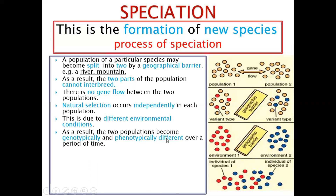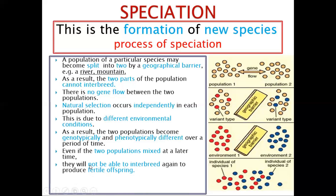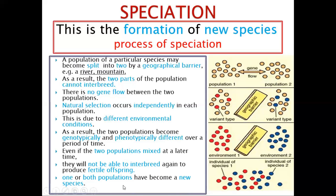If you remove the barrier and leave the populations to mix at a later time, they will not be able to interbreed to produce a fertile offspring. Some may interbreed but may not produce a fertile offspring. This means that one or both of the populations have become new species. Looking at the original kind of species, it is different from what has been formed.